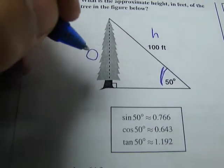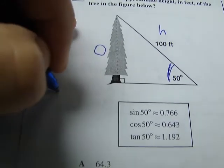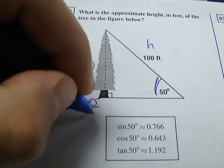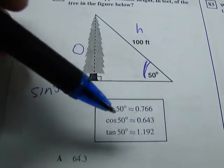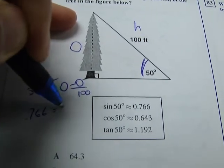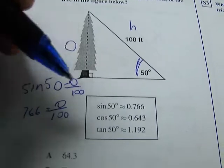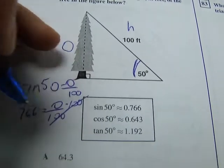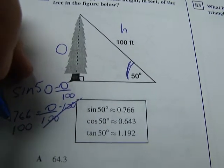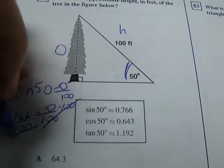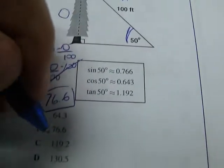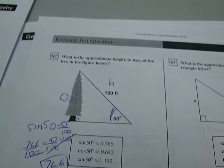So what we've got here again is another opposite hypotenuse or sine problem. So the sine of 50 equals O over 100. And of course we need to use this. So it's going to be .766 equals O over 100. So we multiply both sides by 100. When we multiply this by 100, we move the decimal twice to the right and we've got it. The answer is 76.6. And that will be B.